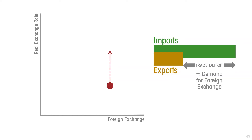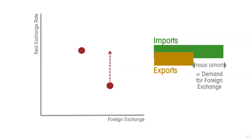An increase in the real exchange rate is going to make imports relatively more expensive, so the volume of imports is going to decline. And it makes domestic production a relative bargain to the rest of the world, so exports are going to increase. The trade deficit shrinks. With a smaller trade deficit, the net demand for foreign exchange for purposes of trade is going to be less. Therefore, the M minus X curve — the curve that represents the net demand for foreign exchange for trade purposes — is downward sloping.